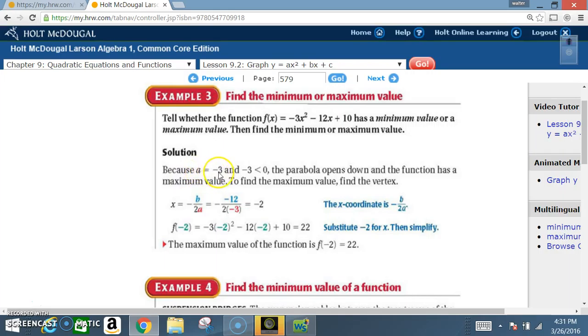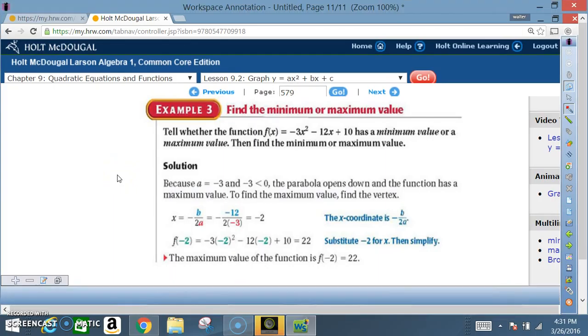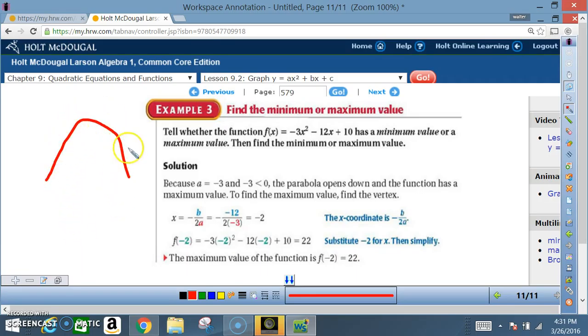Solution: Because a is equal to negative 3 and negative 3 is less than 0, the parabola opens down and the function has a maximum value. So once again, a is negative 3, that means the function will open downward, which means it has this shape. Because it has this shape, that means it has a maximum value.